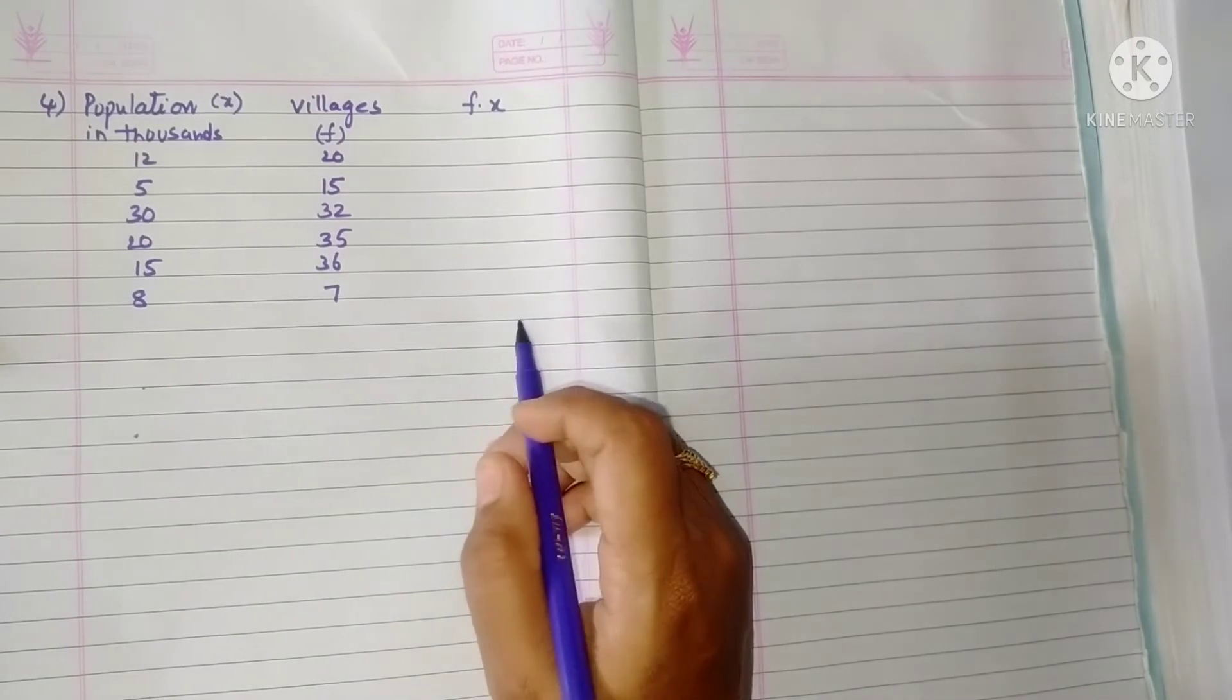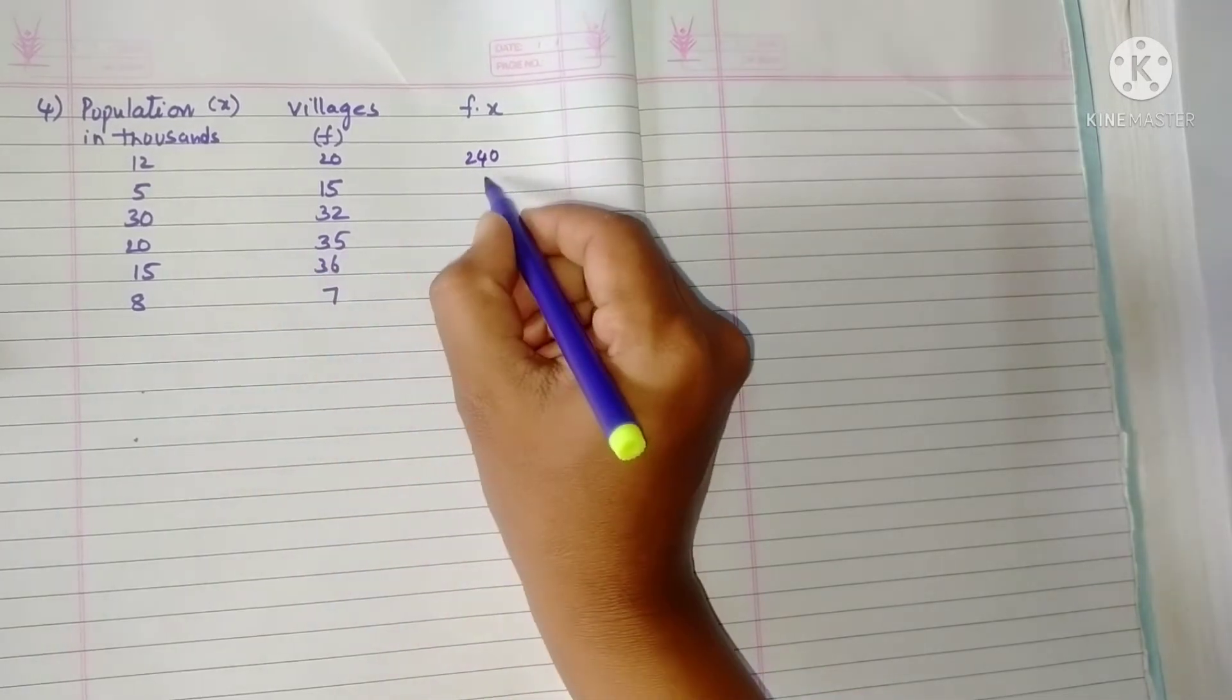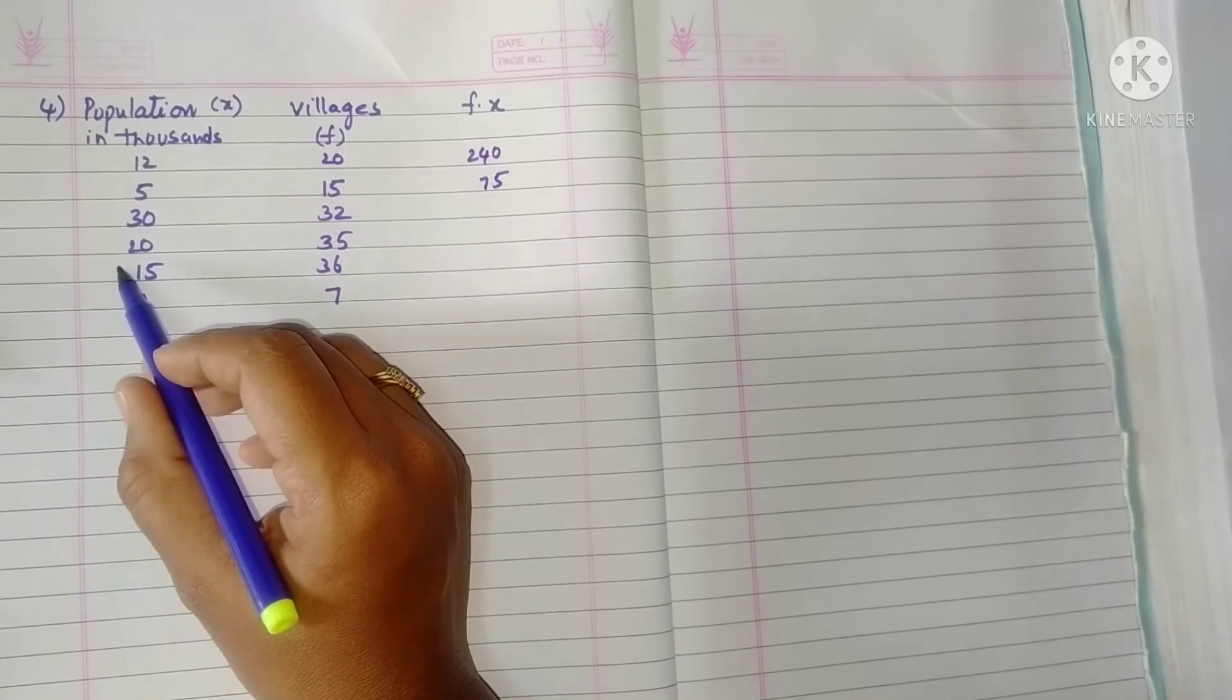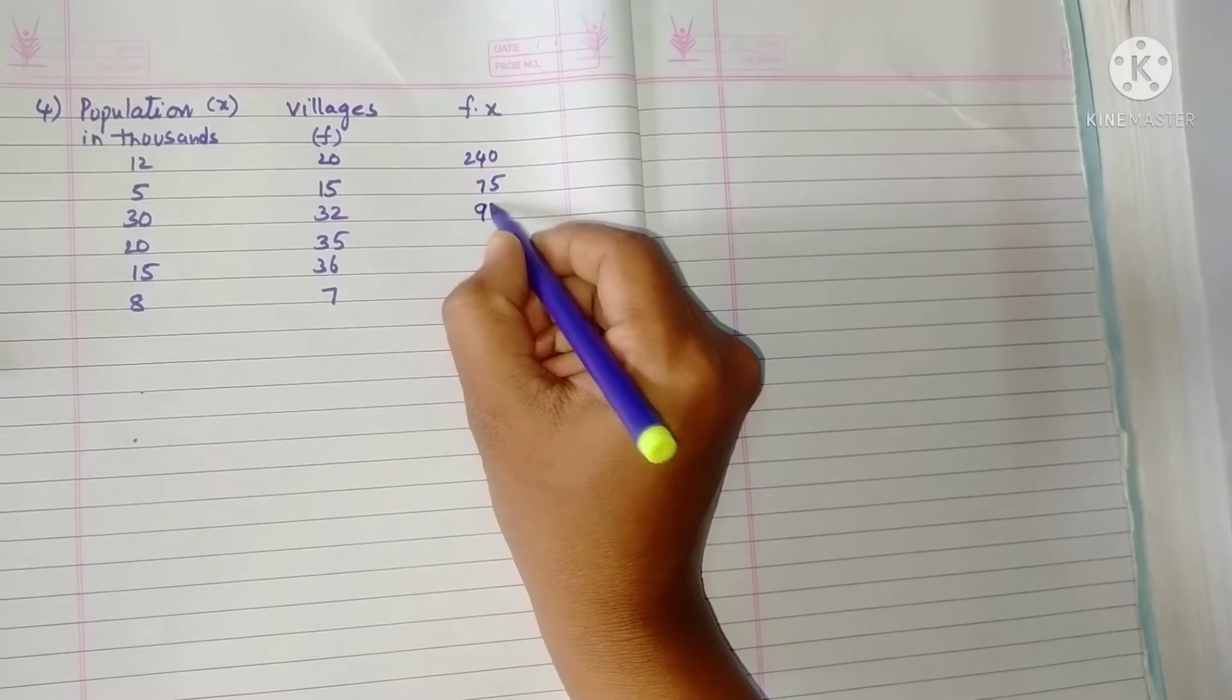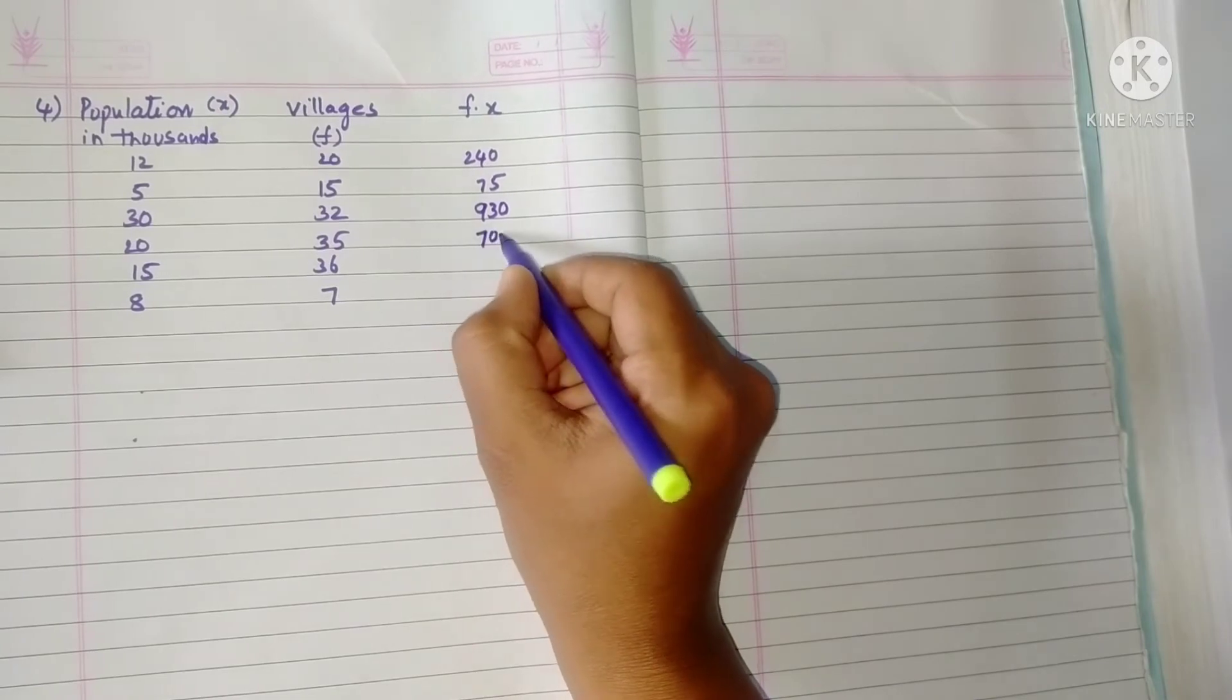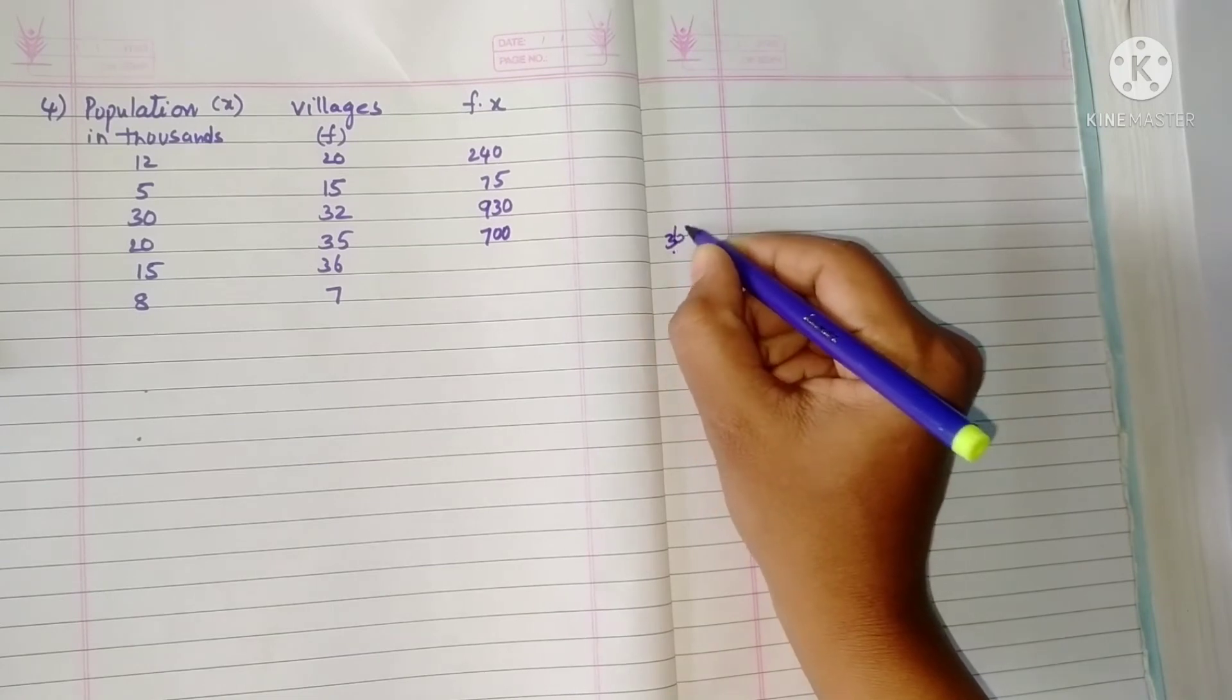Now we want to find out f into x. So 12 times 20 is 240, 15 times 5 is 75, 30 times 3 is 90. Next, 35 times 7 is 245, 36 times 15 is 540.